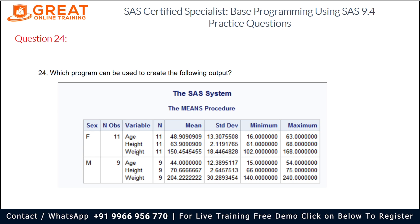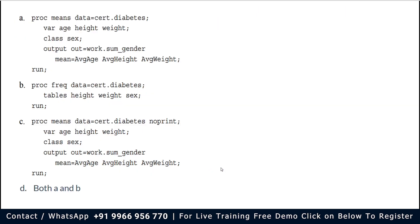That's the difference between the CLASS and BY variables. Here the variables are age, height, and weight. The output also has statistics like N, mean, standard deviation, minimum, and maximum.